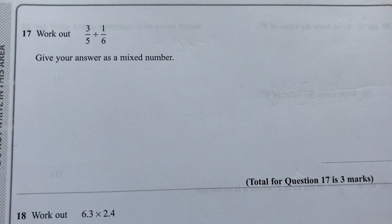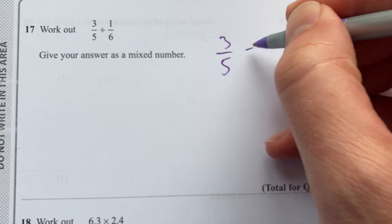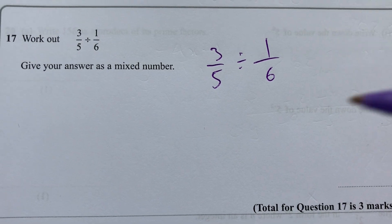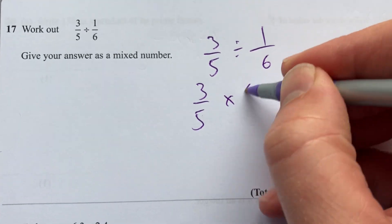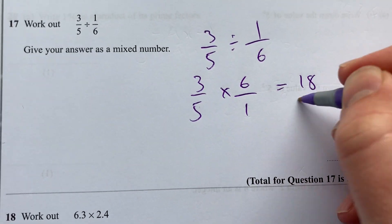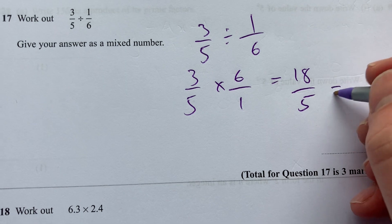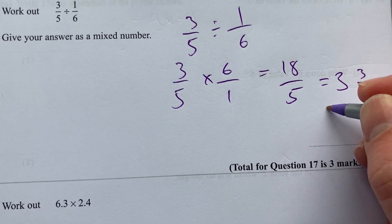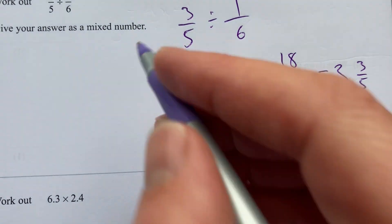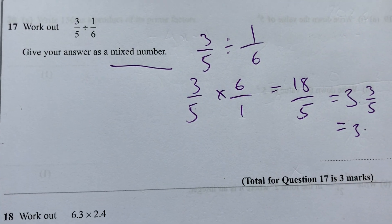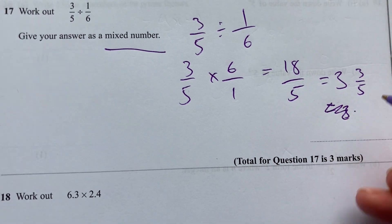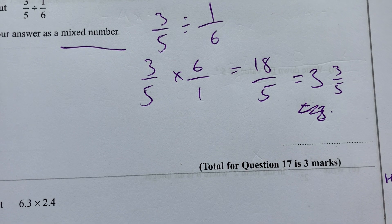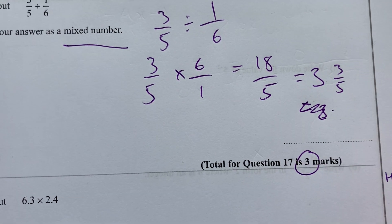Move on to question 17. Three fifths divided by one sixth fractions here. So invert the second one and then multiply 18 over 5, which would be three and three fifths. Or three point... Sorry, they've said leave it as a mixed number. Read the question. Mixed number there. Three and three fifths. There's the improper top heavy. And there's the mixed number there. Three and three fifths. Three marks there.